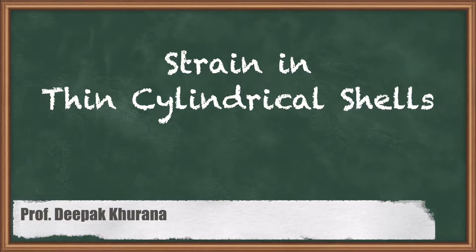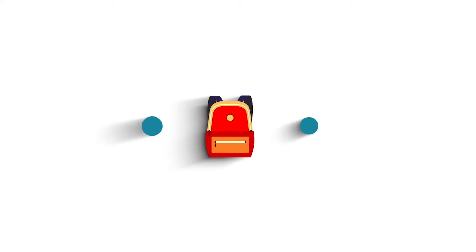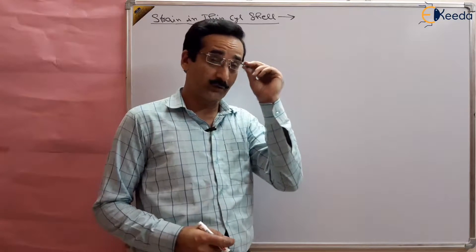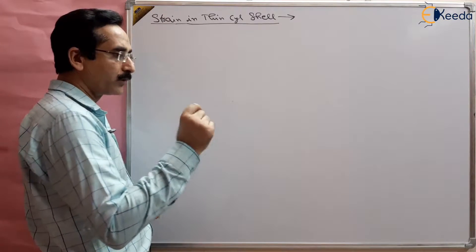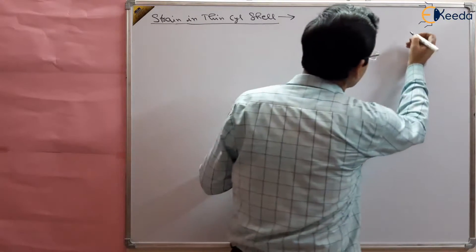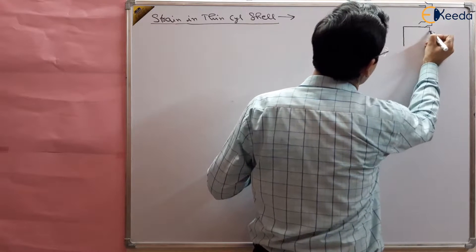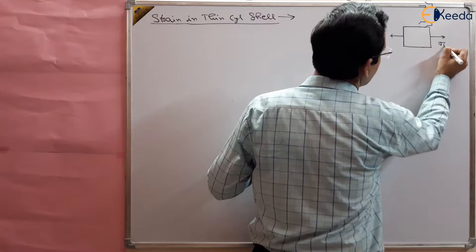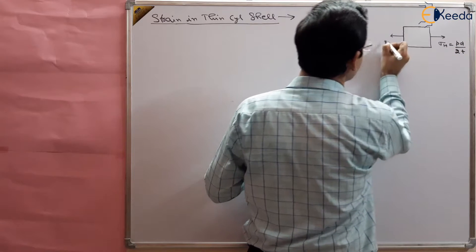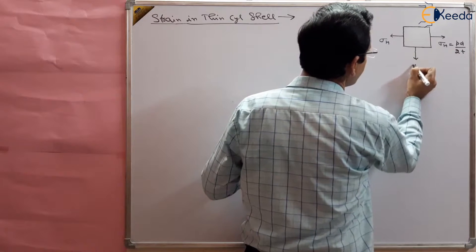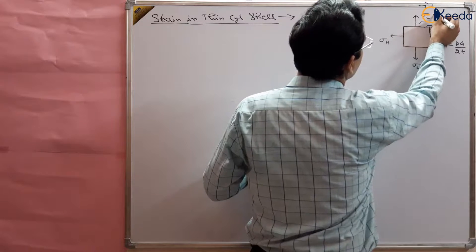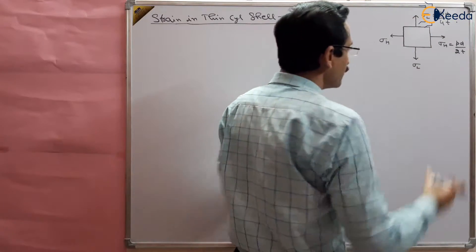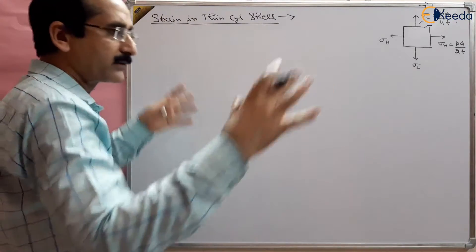Hello students. In this session we are going to study strain in thin cylindrical shell — specifically the volumetric strain. We have two types of stresses on a particle of the material: hoop stress σH which is given by Pd/2t, and longitudinal stress σL which is given by Pd/4t. Due to these stresses, a volumetric strain is developed in the entire volume of the cylinder.